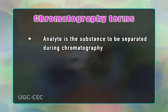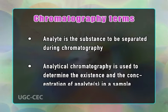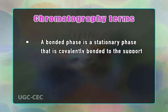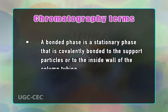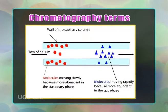Chromatography terms: The analyte is the substance to be separated during chromatography. Analytical chromatography is used to determine the existence and possibly concentration of analytes in a sample. A bonded phase is a stationary phase covalently bonded to the support particle or inside wall of the column tubing. A chromatogram is the visual output of the chromatograph — different peaks correspond to different components of the separated mixture. A chromatograph is equipment that enables a sophisticated separation, e.g. gas chromatographic or liquid chromatographic separation.